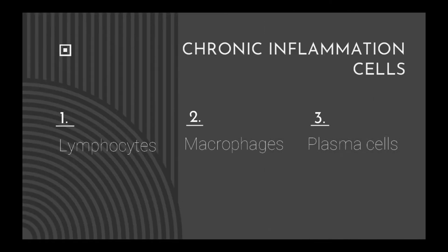Chronic inflammation cells are: 1. Lymphocytes, 2. Macrophages, 3. Plasma cells.